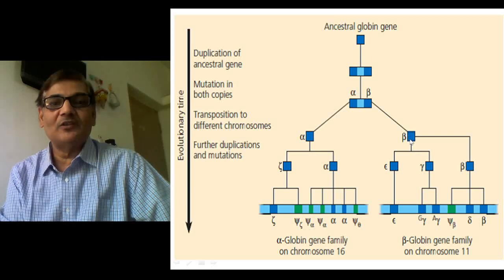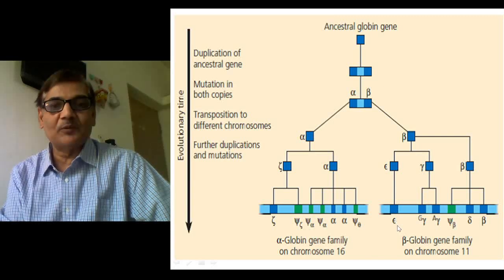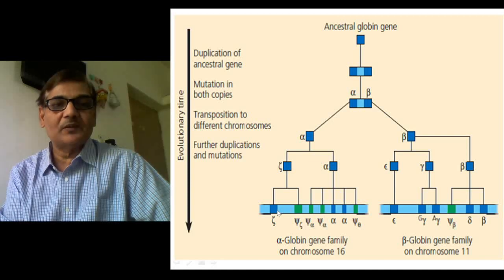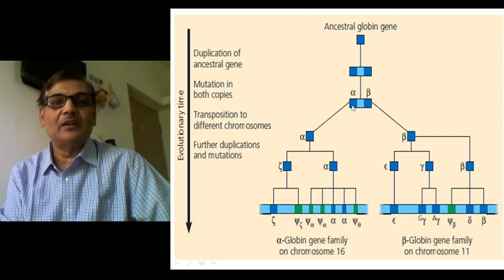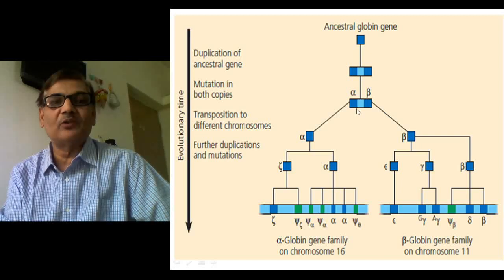Exactly the same way, the beta gene has also undergone duplication and then mutational change, forming the beta gene family. The different gene segments are epsilon, gamma G, gamma A, pseudo-beta gene, delta gene, and the beta globin gene itself. All these exist because the ancestral gene duplicated and then differentiated because of mutational change. It also got transposed onto two different chromosomes, so presently we have two gene families — alpha and beta — present on two separate chromosomes.